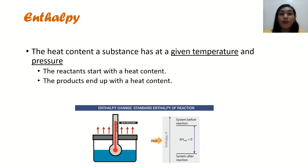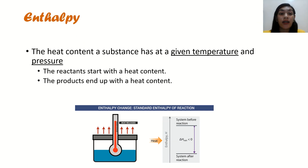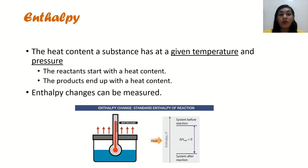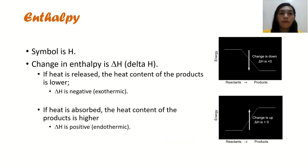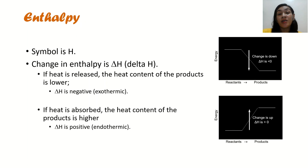Let's proceed to enthalpy. Enthalpy is the heat content a substance has at a given temperature and pressure. It cannot be measured directly because there is no set starting point. The reactants start with a heat content and the products also end up with a heat content, so what we measure are enthalpy changes. We use the symbol capital H for enthalpy, so the change in enthalpy is delta H (ΔH). If heat is released, the heat content of the products is lower, so ΔH is negative — indicating an exothermic reaction. If heat is absorbed, the heat content of the products is higher and ΔH is positive.